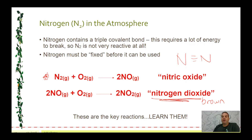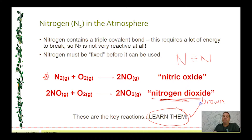Quite often in the morning or late in the afternoon, you might see a brown haze over a city, and that's due to the presence of photochemical smog. These are key reactions, so it's really important that you learn them.